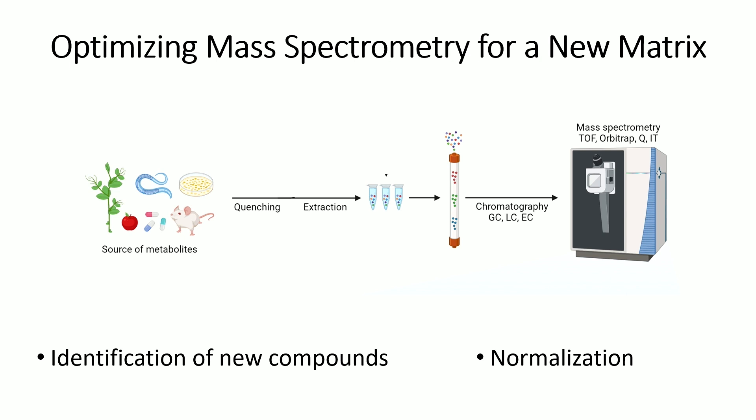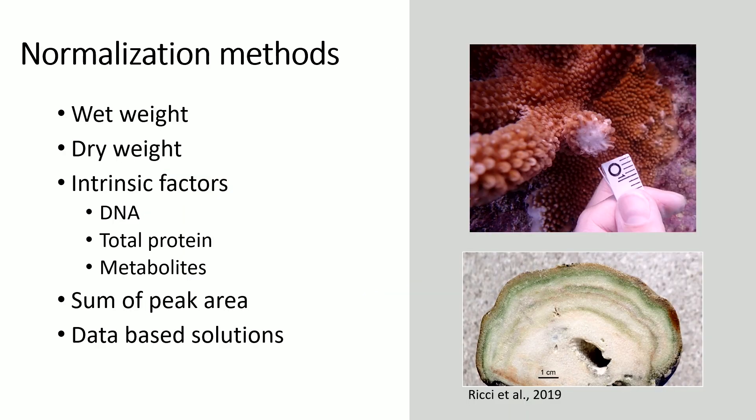One thing I'm going to focus on today is normalization. Normalization is basically whatever you're dividing the amount of the compound you're getting back from the mass spec by, to get the concentration in your original sample. For different tissues and organisms, we use things like wet weight, dry weight, or intrinsic factors like DNA, protein, or metabolites — to make sure that any results we're seeing are a result of the stressor we're looking at, not just there being more sample in your vial when you're doing these assays.